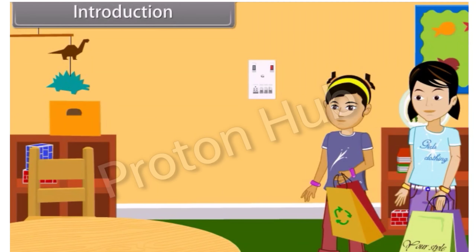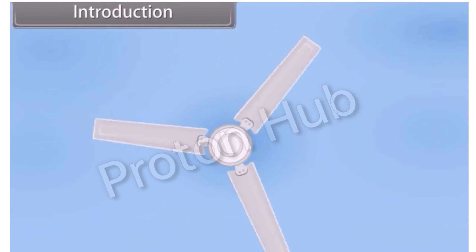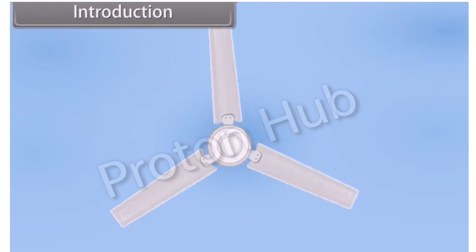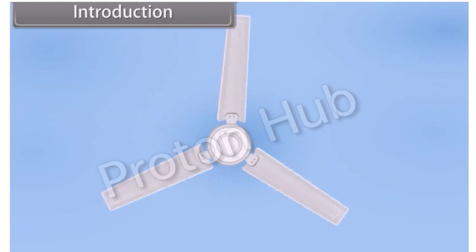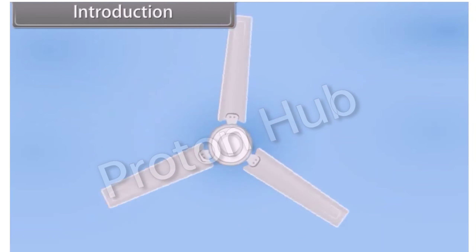Today, Aarti and Rajna went to the market and then returned home. Aarti switched on the fan and the bulb. The fan was running at low speed.